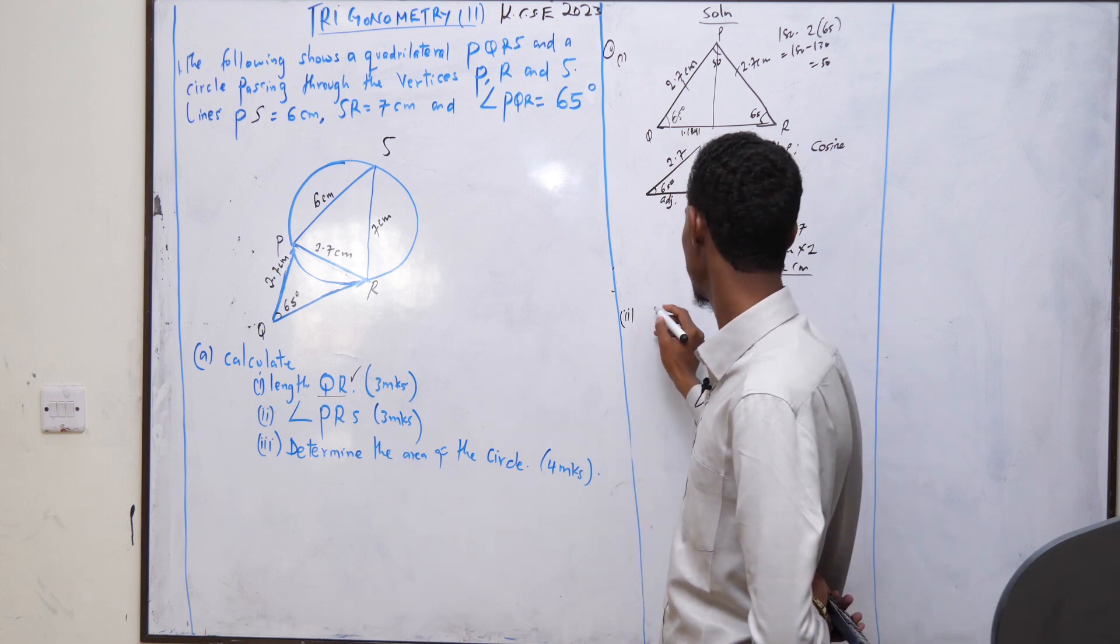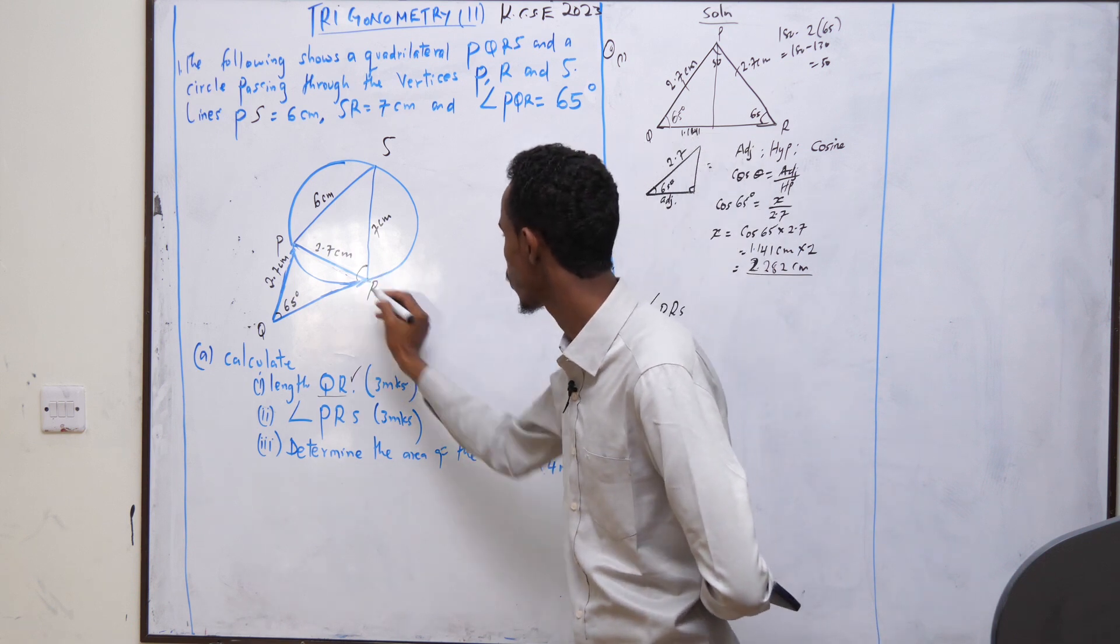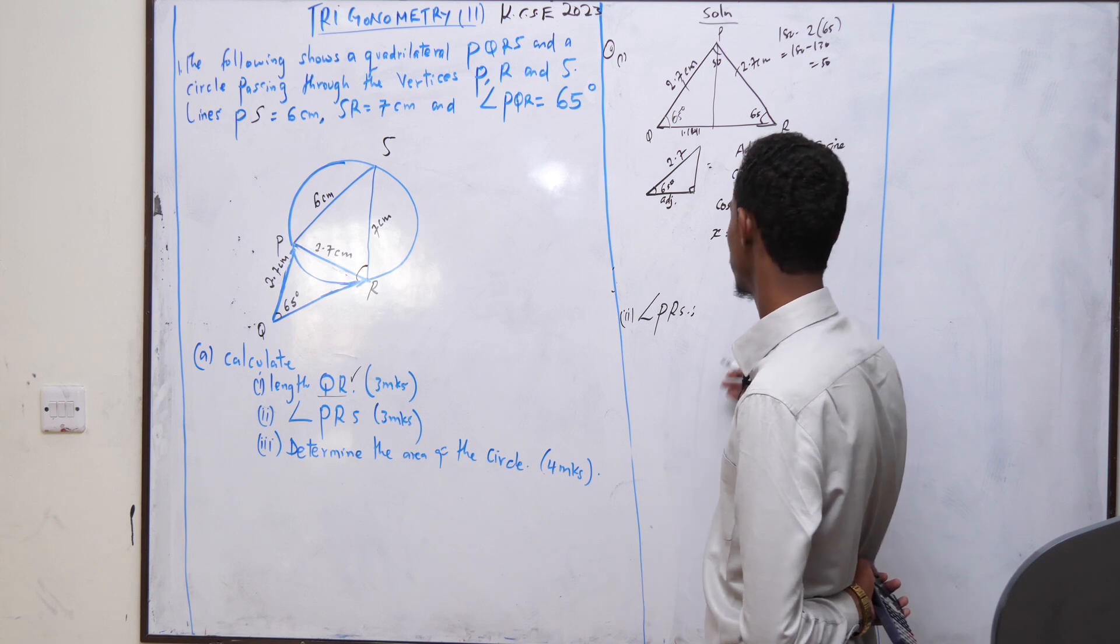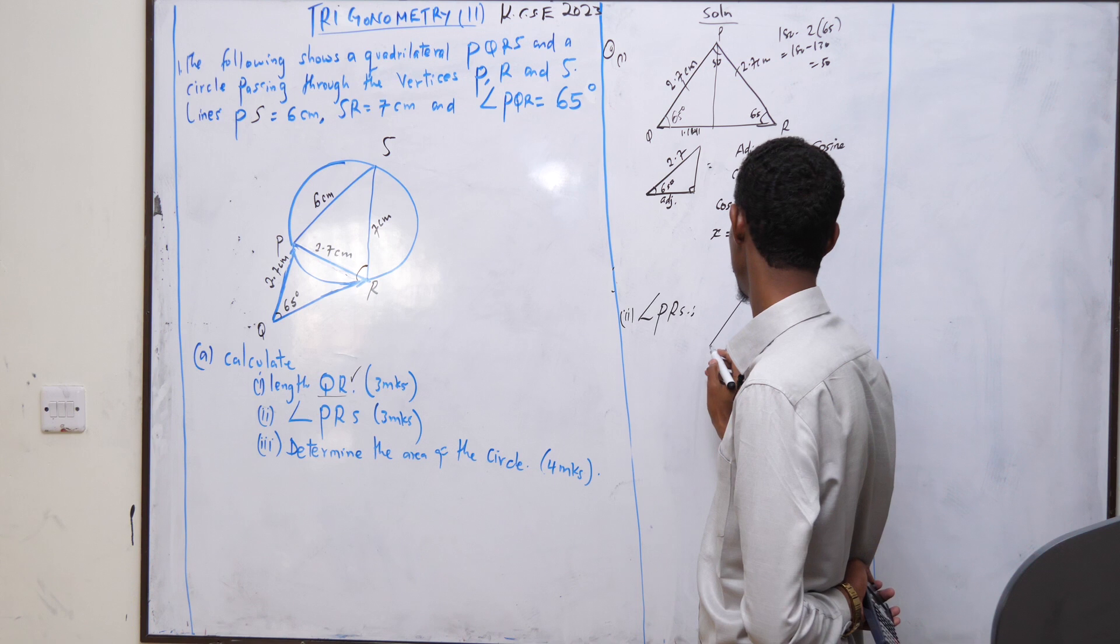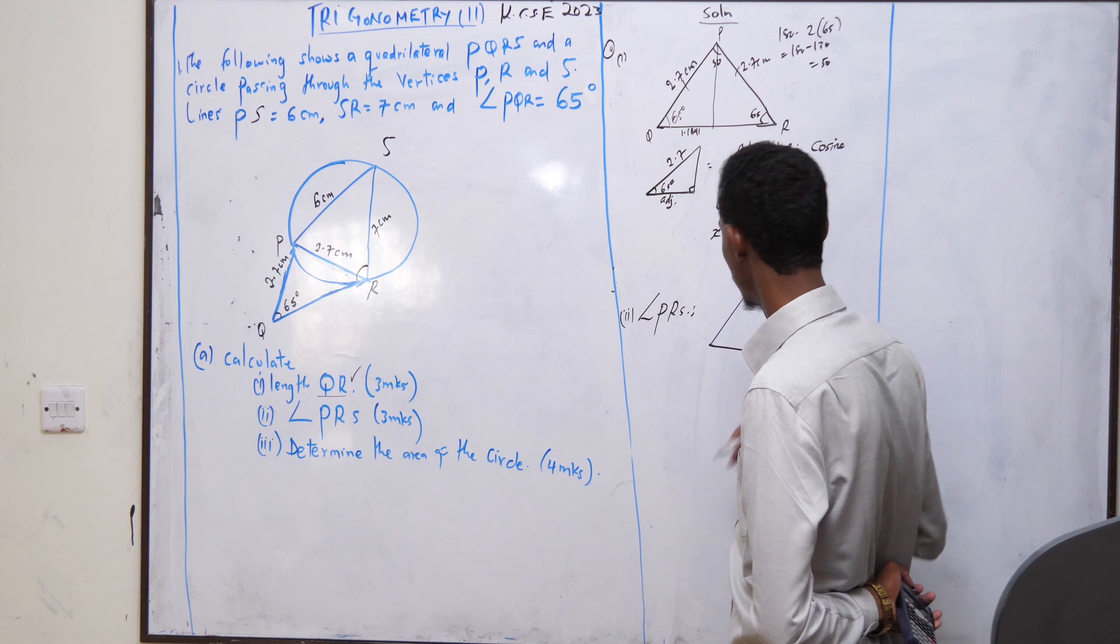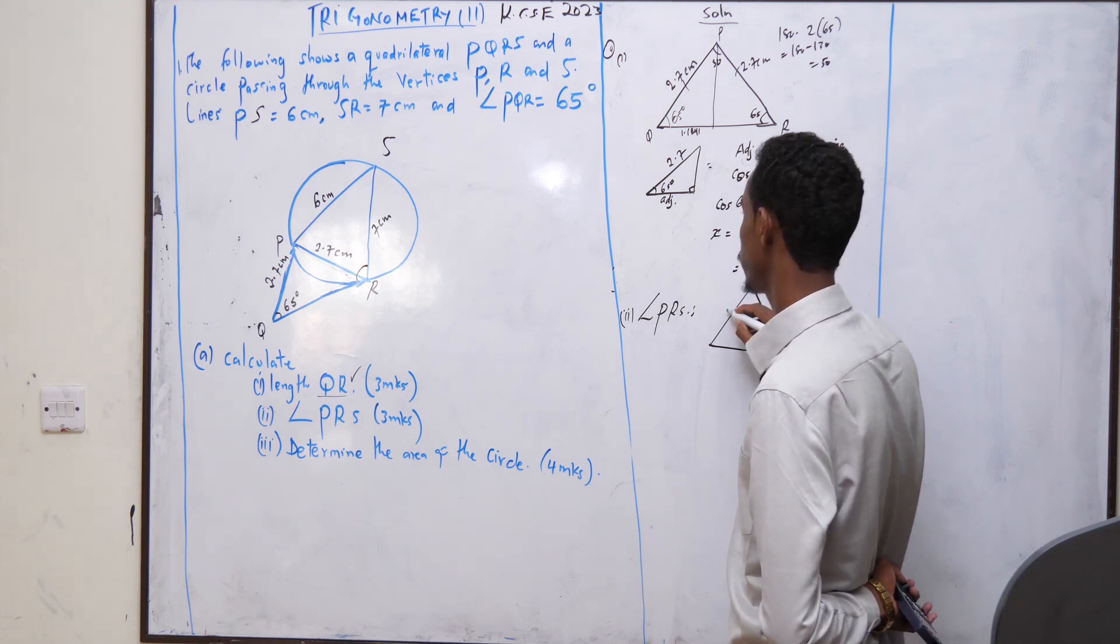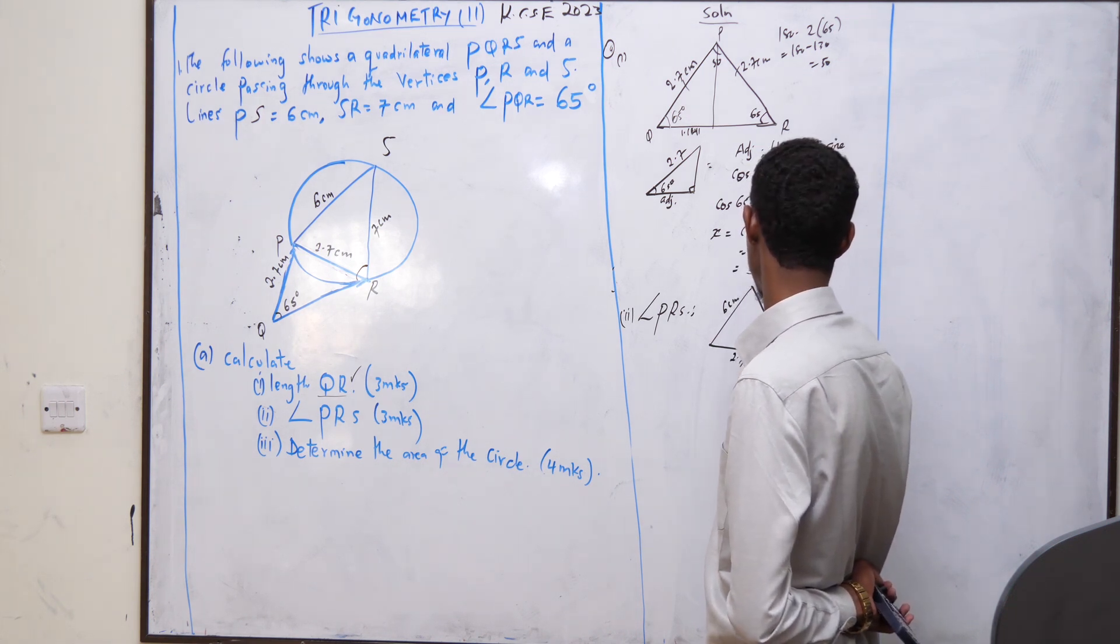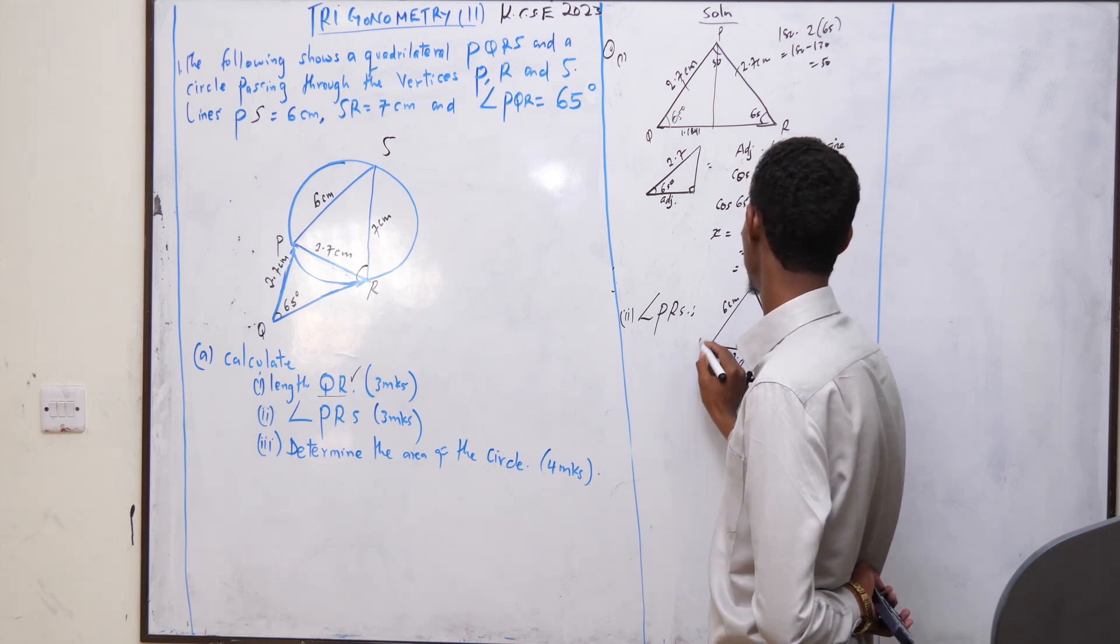Let's go to Roman 2 of the question. Roman 2, you are asked angle PRS. This is the angle. Take out that triangle as well. It becomes something like this. You have 7 centimeters, you have 6 centimeters, you also have 2.7 centimeters. Here is SRP.